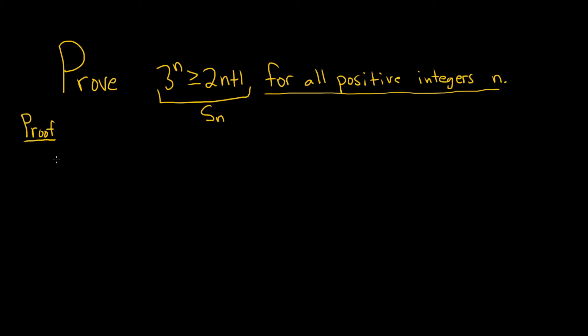There's a couple steps. The first step is called the base step, or the base case, depending on who you talk to and the book you read. The base case is the step where you have to show that it's true for the smallest positive integer you're working with. So here, the smallest one we're working with is 1, because it's all positive integers.